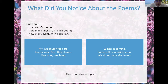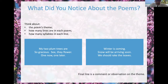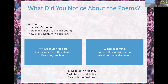So there are three lines in each poem. The final line is a comment or an observation, just talking about what they just talked about. And they're about nature. Five syllables on the first line, seven syllables in the middle line, and five syllables in the final line.